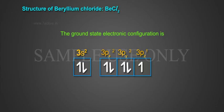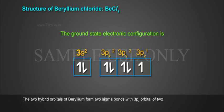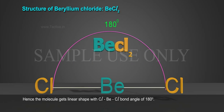The ground state electronic configuration is the two hybrid orbitals of beryllium form two sigma bonds with 3pz orbital of two chlorine atoms.